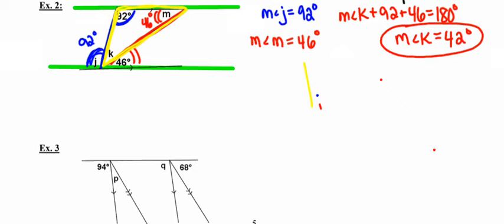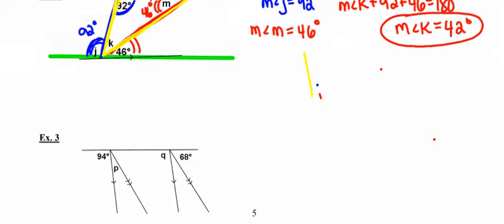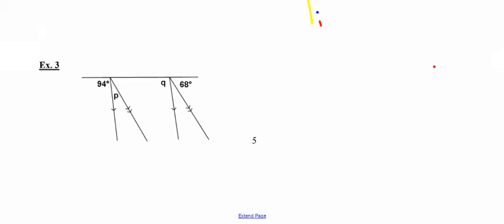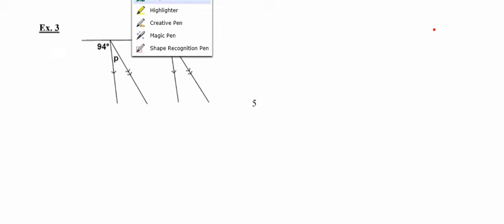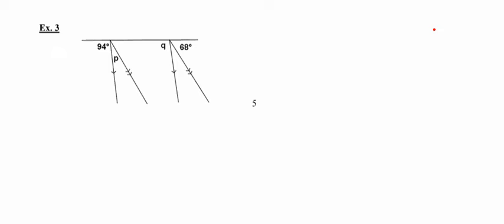Notice that in that example I didn't need to draw any auxiliary lines at all. That brings us to the last example, number three. This one is a little different in that it has two different pairs of parallel lines. I'll start by highlighting just one pair. In this diagram, there's only one transversal, represented by the blue line.